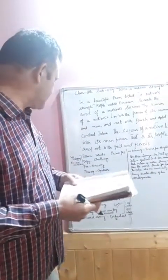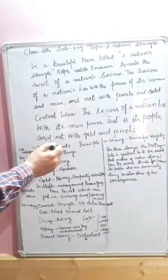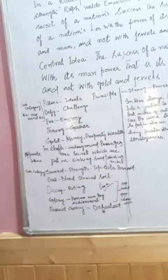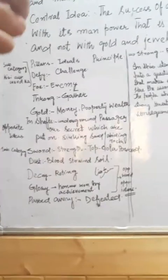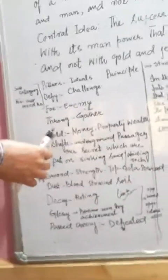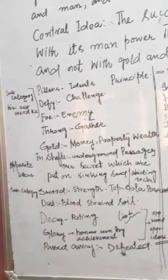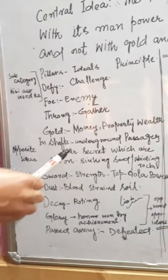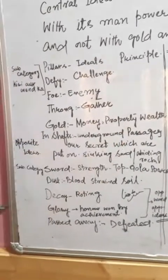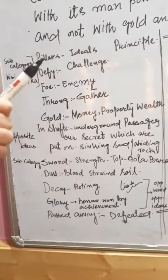Here students, I would like to explain pillars - it means ideals, principles. We have a word defy - we call it challenge. Another word is throng - we call it gather. Gold - gold's meaning is not just gold, but money, property, wealth. We can call this information. Shafts, underground passages, secrets.